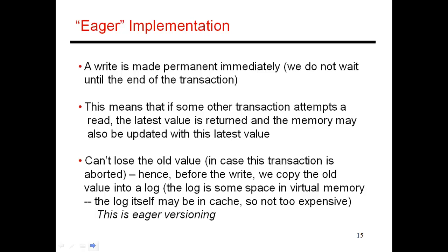Let's move on to the eager-eager design. Here's transaction one and here's transaction two. Let's say this transaction has done a read of A and maybe a write of B. Previously when doing a write, I was not telling anyone else - that's being lazy with conflict detection. But now I want to let everybody know right away that I'm doing a write to B. Let's assume a directory-based protocol for now.